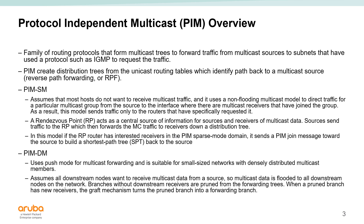PIM sparse mode is very common and it assumes that most hosts on the network do not want to receive multicast traffic, so it does not flood multicast traffic. It will only send multicast traffic to routers that have specifically requested it. Sparse mode uses a concept of rendezvous points, which act as a central source of information for sources and receivers of multicast data. If the rendezvous point router has interested receivers, it sends a join message to the source and builds a shortest path tree back to the source.